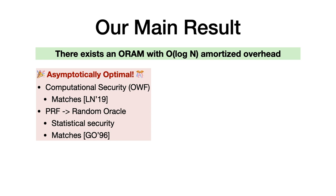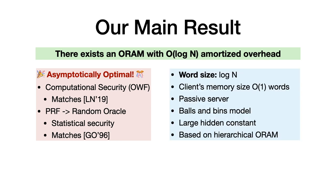As mentioned, the model is when the word size is log n, client memory size is constant, and the server is passive. Our construction is in the balls-and-bins model, which means that every data block is treated as an opaque unit. Our construction is not practical, and even though it is asymptotically optimal, its concrete efficiency is relatively bad.